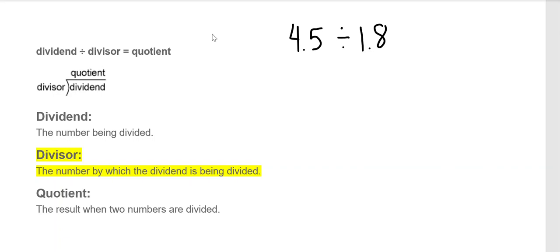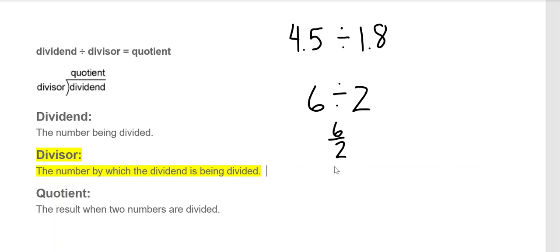The quotient is the answer to a division problem. Order matters when you're dividing. If you're given a division problem like six divided by two, that can be represented as a fraction six over two, that's the same thing as six divided by two, or that can be represented with the division box where we put six inside and the two on the outside.